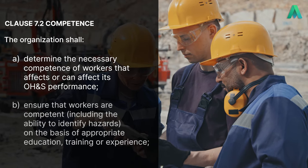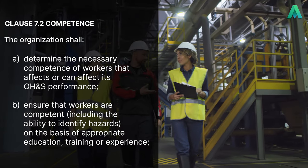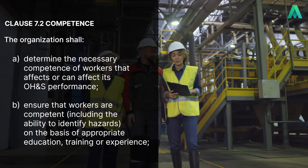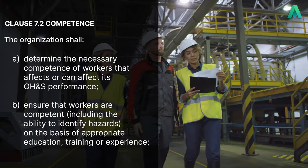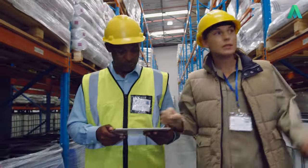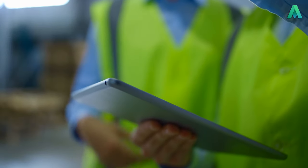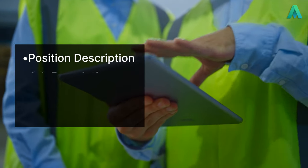And B, ensure that workers are competent, including the ability to identify hazards on the basis of appropriate education, training or experience. It's up to the organisation to figure out what competence requirements are needed for the different roles relevant to the OH&S management system. You normally see what these competence requirements are by being documented in position descriptions or job descriptions.